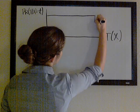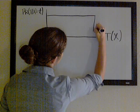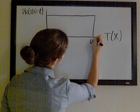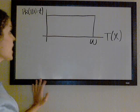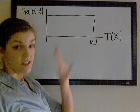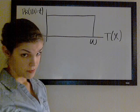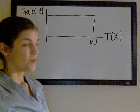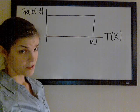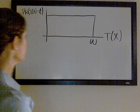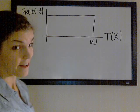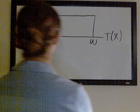When we're talking about future lifetime, there's going to be a limiting age, and that's denoted by omega. This is just a uniform distribution — they call it the de Moivre distribution in life contingencies, so don't be intimidated by the name.